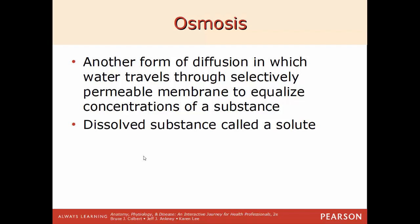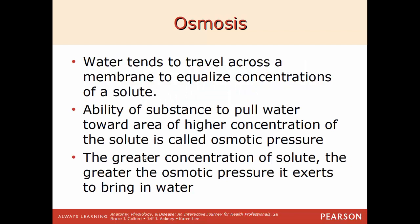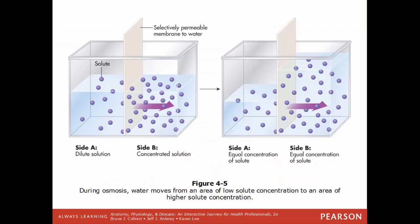Osmosis is another form of diffusion where water moves across a selectively permeable membrane to equalize concentrations of a substance called the solute. The reason for the movement of water is to equalize solute concentrations on either side of the membrane. Nature likes balance — if there's too much sugar or salt on one side of a membrane, water will rush in to balance it out. The ability to pull water toward an area of high solute concentration is called osmotic pressure.